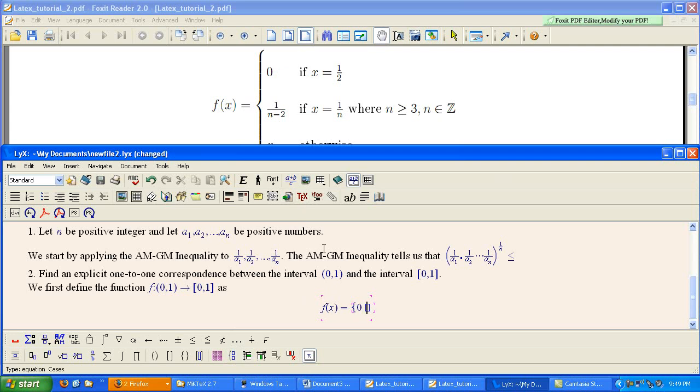we have zero. If x equals... Here's something else that's special. If you want text, just regular text, you have to type backslash mbox.